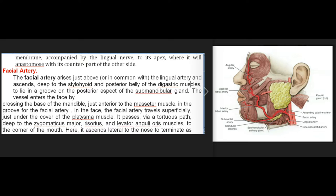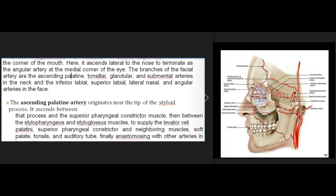The facial artery arises just above or in common with the lingual artery, ascending deep to the stylohyoid and posterior belly of the digastric muscles to lie in a groove on the posterior aspect of the submandibular gland. It enters the face by crossing the base of the mandible just anterior to the masseter muscle. In the face, the facial artery travels superficially just under the cover of the platysma muscle, passing via a tortuous path deep to the zygomaticus major, risorius, and levator anguli oris muscles to the corner of the mouth.